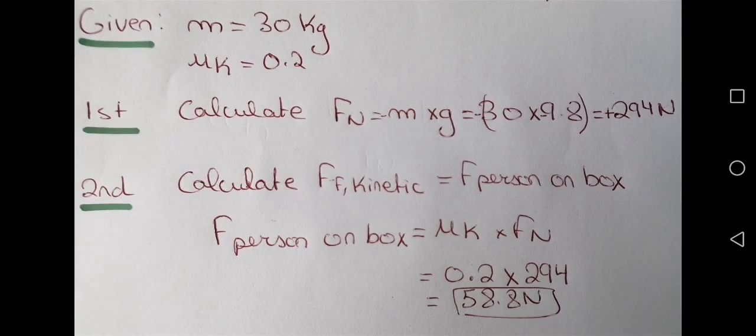First, we write the given: mass equals 30 kilograms and the coefficient UK equals 0.2. Remember, if the mass is given in grams, divide by 1,000 to convert to kilograms. Then calculate the normal force: Fn equals negative m times g equals negative 30 times negative 9.8 — the answer is positive because the normal force is exerted upwards. Then calculate the force of kinetic friction, which equals the force the person exerts on the box: FF kinetic equals UK times Fn equals 0.2 times 294. Thus, the answer is 58.8 newtons.